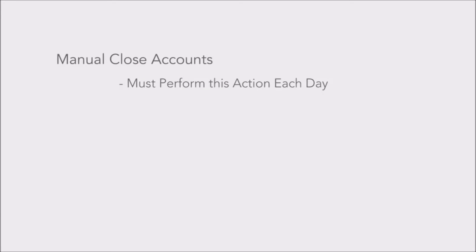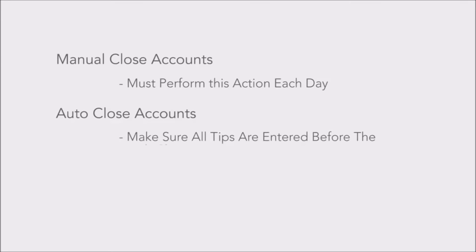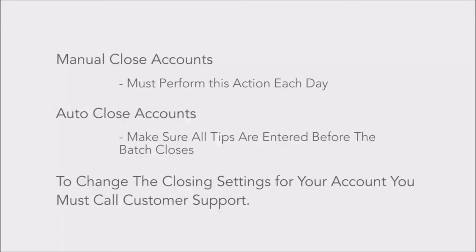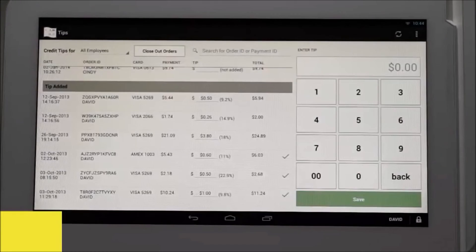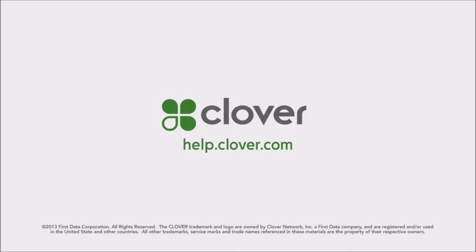If your account is set up to manual close, you will need to perform this action each day to ensure you are funded for these transactions. If you're set up on auto close, make sure that all your tips have been entered before your batch closes. To change these settings you must contact Clover support. You will see a confirmation that your orders are marked for close out, and you will then be taken back to the tips app screen. This completes this tutorial on the Tips app.